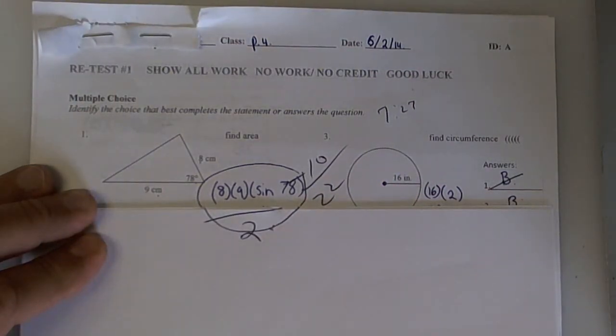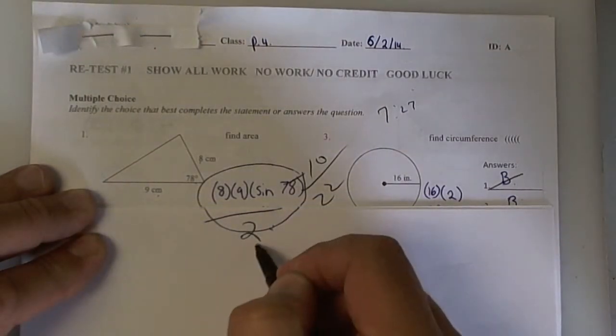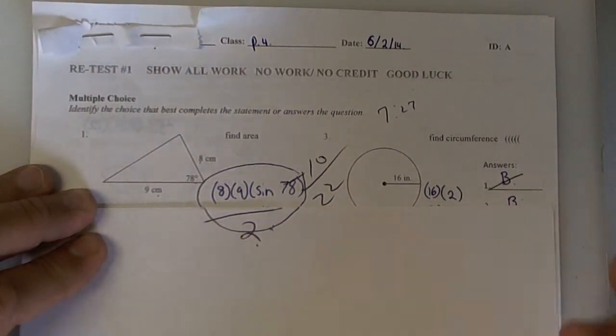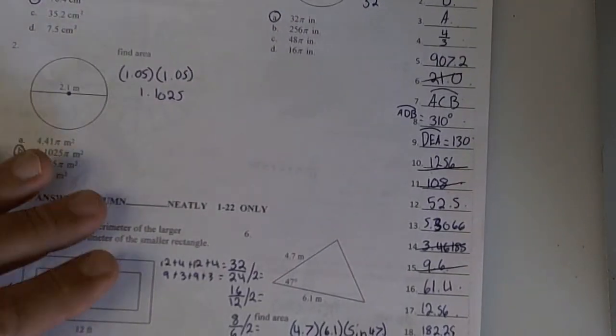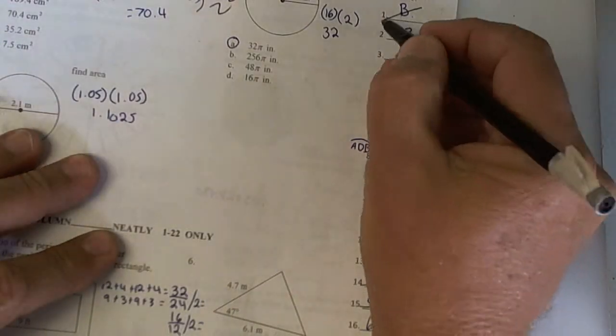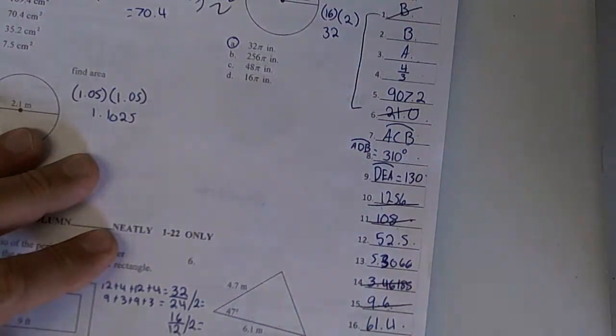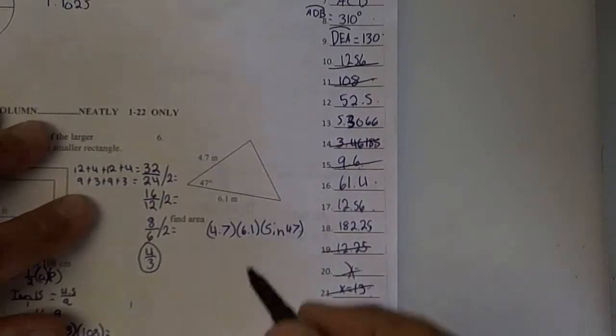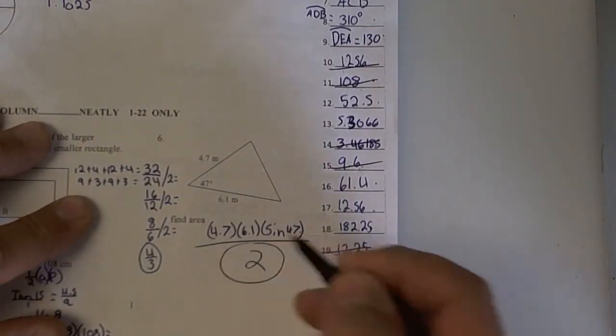It's a triangle. The area of a triangle is always divided by two. If you would have divided your answer by two, you would have gotten number one right. And you would have gotten number six right. These two problems alone would have been enough for you to get what you're trying to get. So that's why you missed number one and number six. You should have divided by two, and you did not.